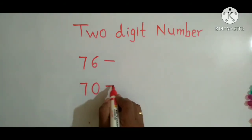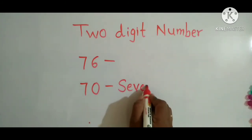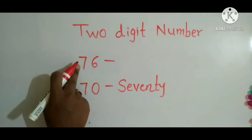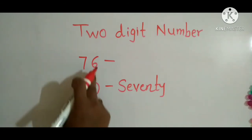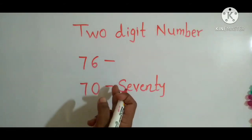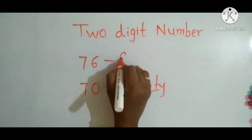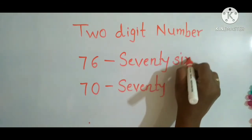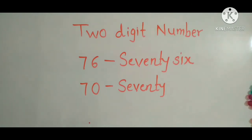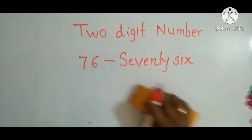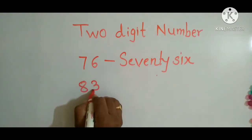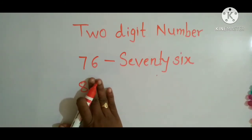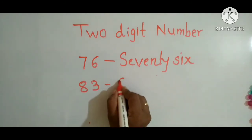This number we read as 70. And this digit is 6. So 7 is at the tens place, so we read 70. And the ones place number — you know how to read that — it's 6 only. So the number is 76. Suppose we take one more number: 8 and 3. So 8 is at the tens place. If 0 were here, we could read it as 80. And with this 3, the number is 83.